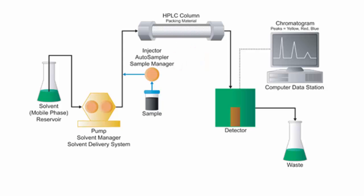After exiting the column, analytes pass through the detector, which generates a signal as a function of the concentration of each analyte. After passing through the detector, the analytes and the mobile phase are collected in a waste container.